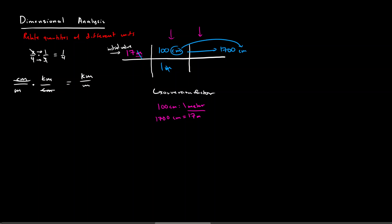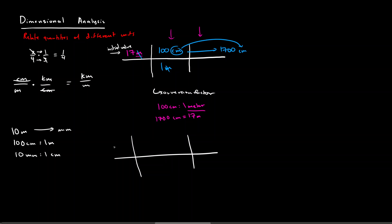Now let's take a quick example that uses two conversion factors. We have 10 meters and want to convert this into millimeters, but we don't know the exact conversion between meters and millimeters. However, we know two things: A, there are 100 centimeters in 1 meter, and B, there are 10 millimeters in 1 centimeter. We want our final answer in millimeters, so millimeters will appear in the numerator of one of our conversion factors.